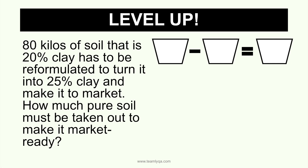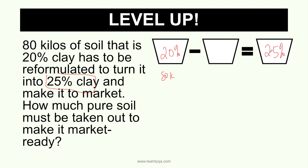So let's place the information from the problem. First, we have 80 kilos of soil that is 20% clay. The goal is to reformulate it — to turn it into 25% clay. I put the starting state on the left side because that's where we begin, and the desired result goes on the right side — just like before when we mixed things, the result went on the right side.